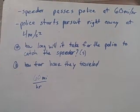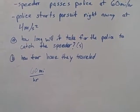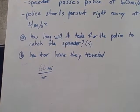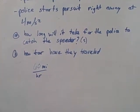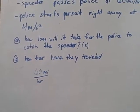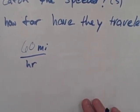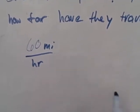So the speeder passes the policeman at 60 miles an hour and the policeman starts right away the pursuit at four meters per second. How long will it take for the policeman to catch the speeder in seconds and how far have they traveled? You know that the speeder is going 60 miles an hour, so then you need to convert miles an hour to meters per second.